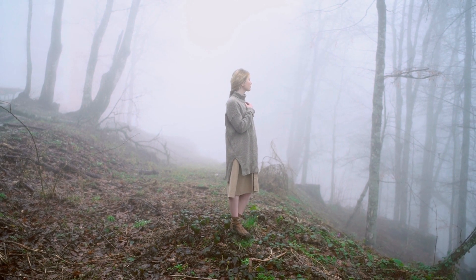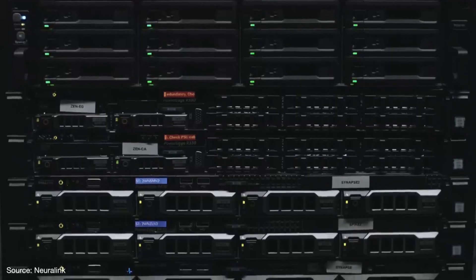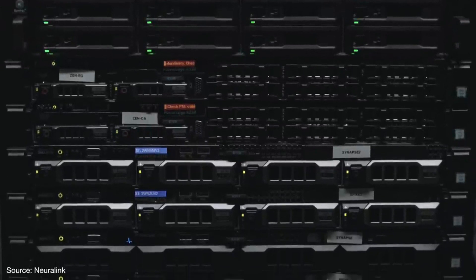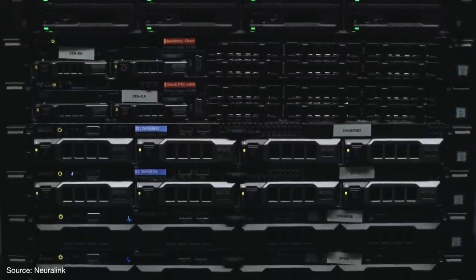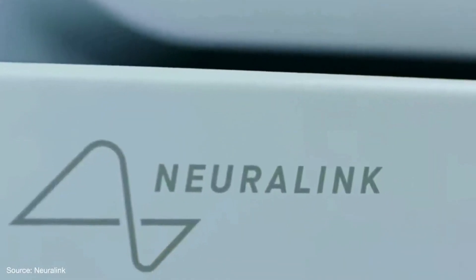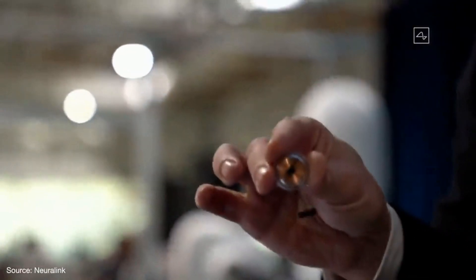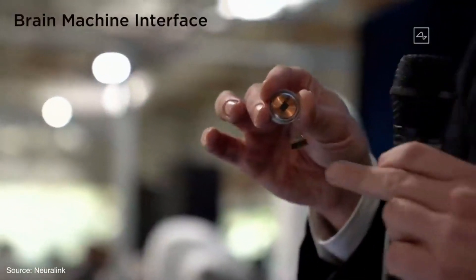Elon Musk says that you will eventually be able to store your memories as a backup and then download them into a robot body. Neuralink is a brain machine interface, or BMI, that can read and write into our brains.